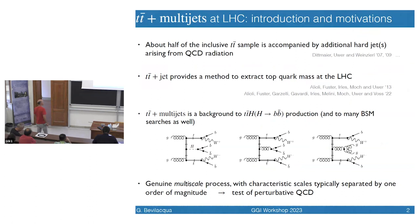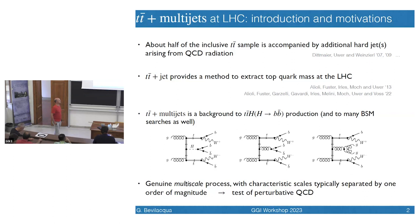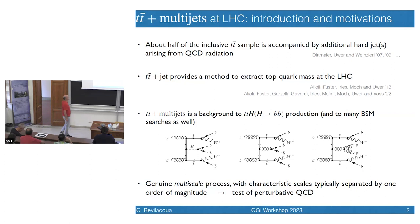Allow me to start with some motivation and introduction. As you know, about one half of the inclusive tt̄ sample at the LHC is accompanied by additional hard jet radiation, which is QCD radiation. There are many interesting applications of tt̄ in association with hard jets — it's a broad topic. Even restricting attention to one hard jet, it provides a powerful method to extract the top quark mass at the LHC. More generally, tt̄ plus multi-jet production is also interesting not only as a signal per se, but also as a background in many analyses.